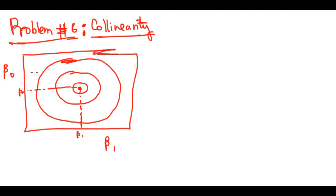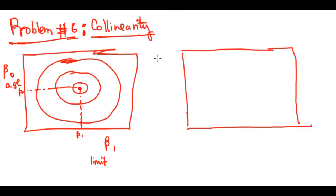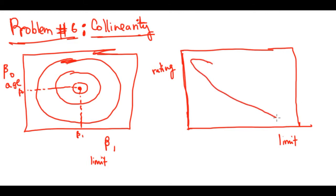Consider the case of predicting credit card balance based on age and account limit — there could be no correlation between those two. But if we instead use credit rating and credit limit as predictors, we can see that these are actually related to one another.